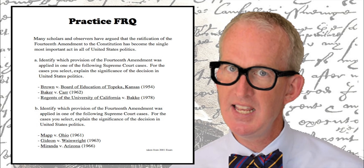This question asks us to do three distinct tasks, twice — three distinct tasks in A and three distinct tasks in B. Those tasks are: one, identify an appropriate provision of the 14th Amendment; two, discuss how that provision was used in one of the cases; and three, explain how that case was significant to U.S. politics.